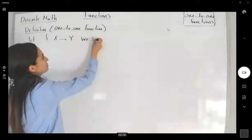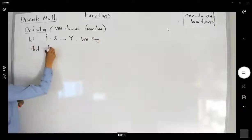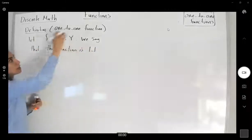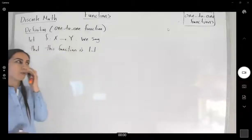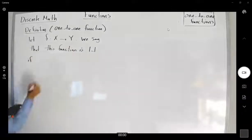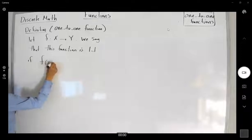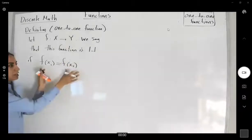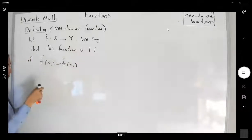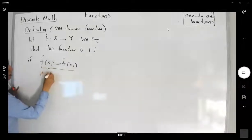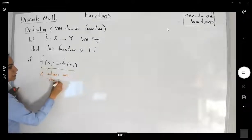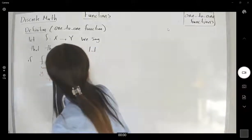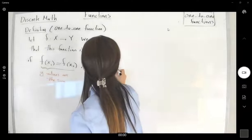We say that this function is one-to-one — we write it as a one-to-one function. If f of x₁ is equal to f of x₂, that means if y values are the same, we can conclude that x values are the same as well. So if y values are the same, then x values are also the same.